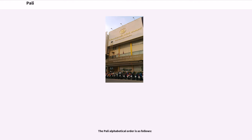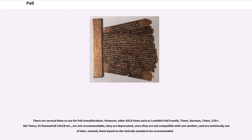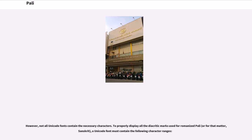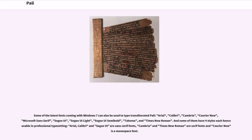The Pali alphabetical order follows a specific sequence. LH, although a single sound, is written with a ligature of L and H. There are several fonts available for Pali transliteration. Older ASCII fonts such as Leads bit Pali translit, Times Norman, Times CSX+, and SKT Times are not recommendable — they are deprecated since they are not compatible with one another and are technically out of date. Instead, fonts based on the Unicode standard are recommended, though not all Unicode fonts contain the necessary characters. To properly display all diacritic marks used for Romanized Pali, a Unicode font must contain the required character ranges.